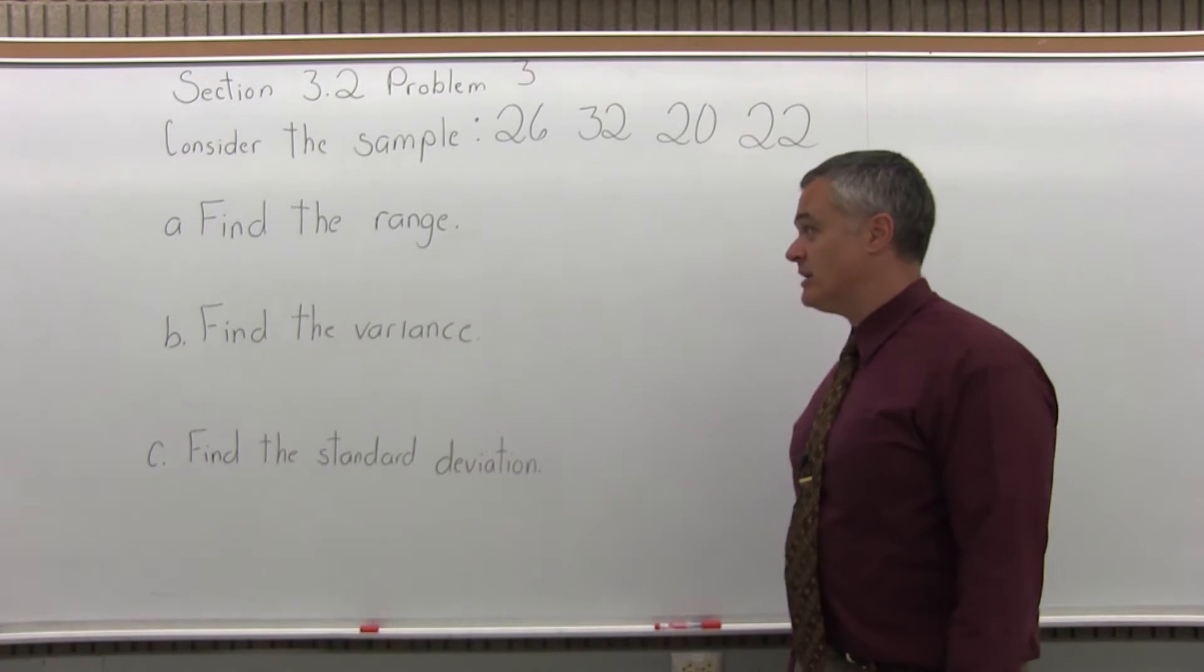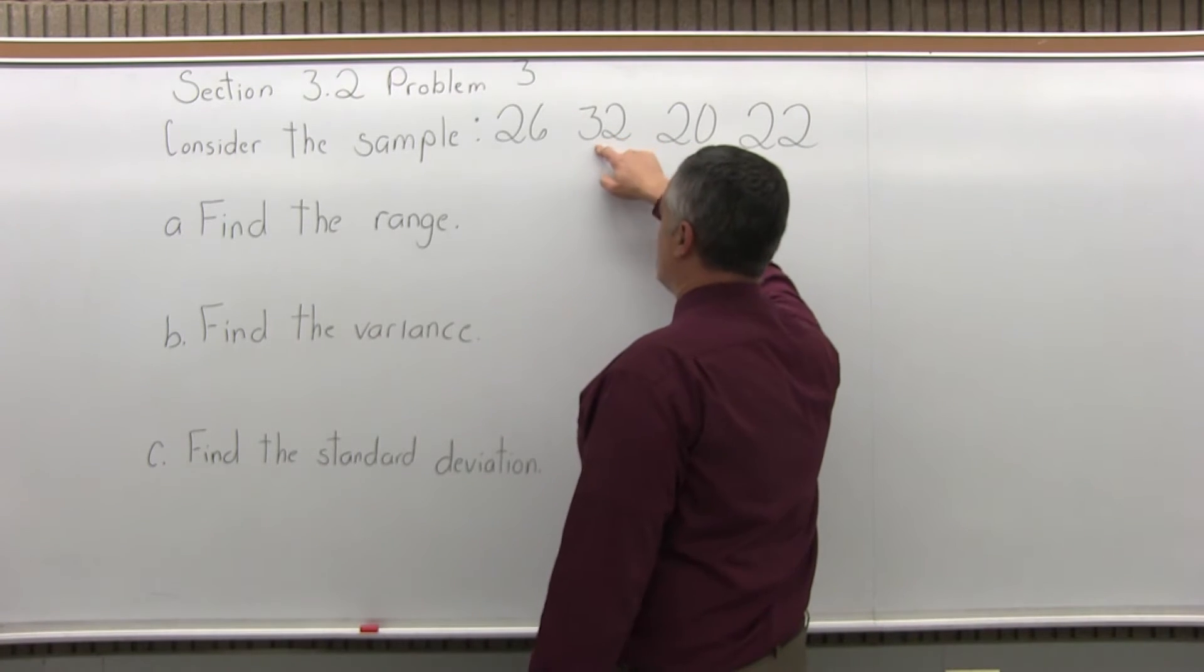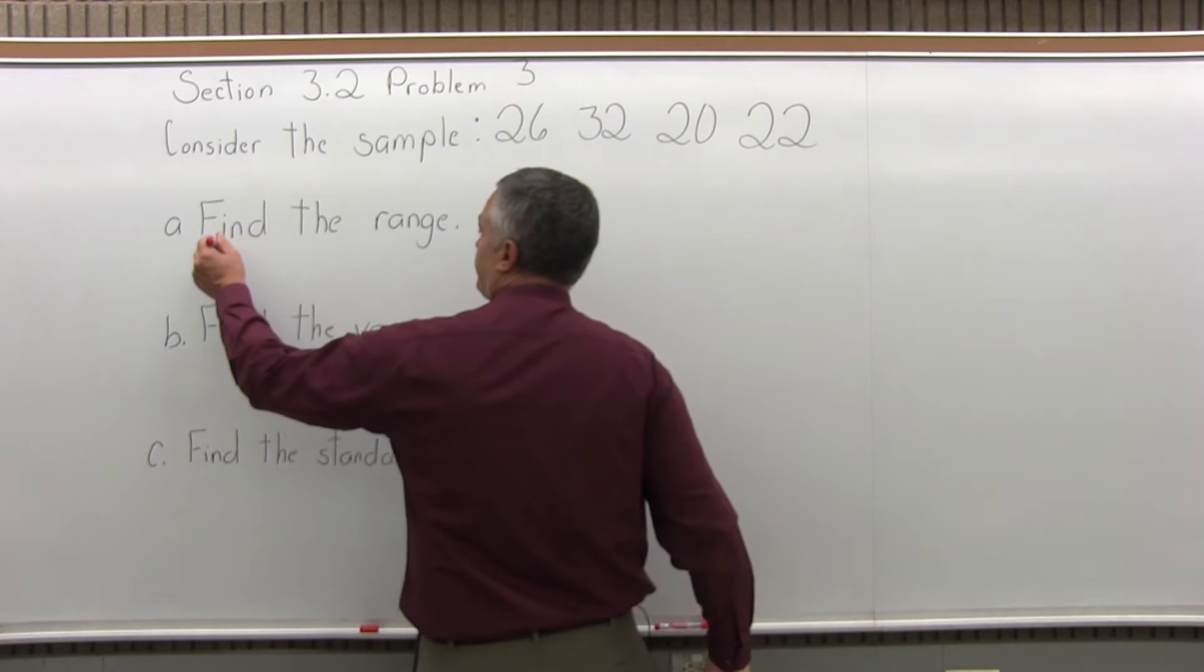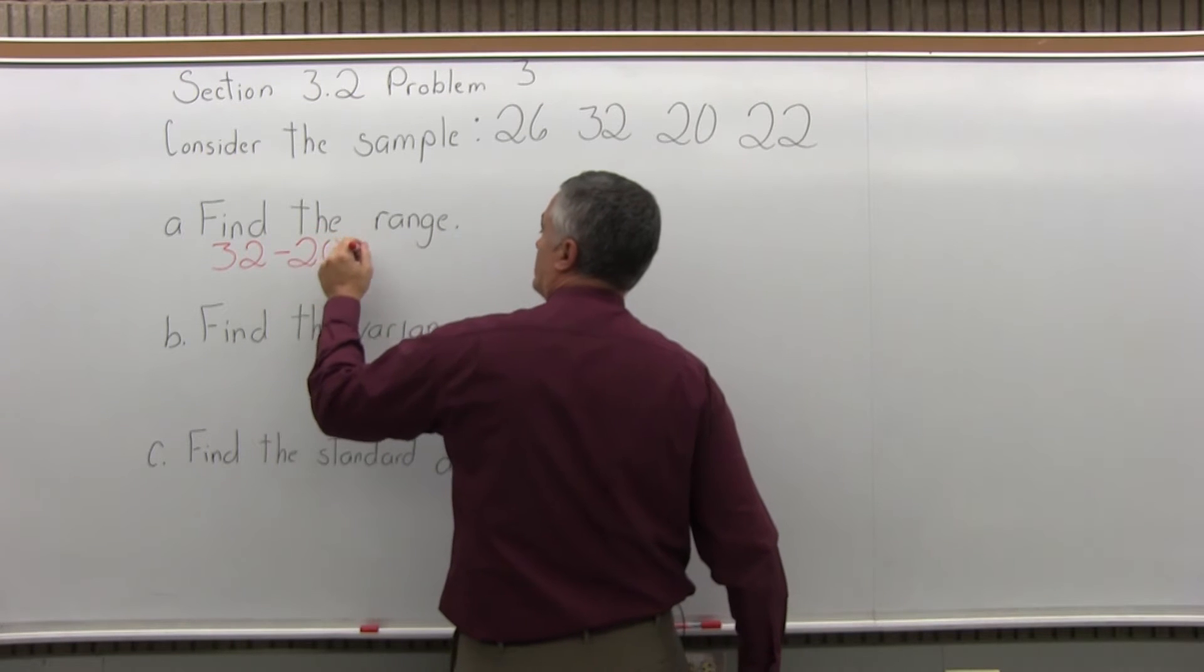So the range is simply the largest data value, which for this problem is 32, minus the smallest data value, which will be 20. So if I do 32 minus 20, that gives me a range of 12.